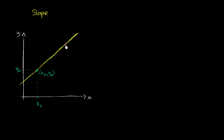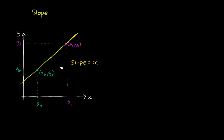And let's say we have another point over here, where x is x₁ and y is y₁. So this is the point (x₁, y₁). The slope of this line — which is often denoted by the letter m — is your rate of change of y with respect to x. For a given change in x, how much are you changing y? That's change in y divided by change in x. This triangle is the Greek letter delta — it's shorthand for 'change in whatever.' So slope is change in y over change in x.